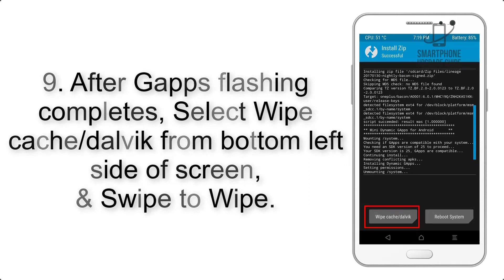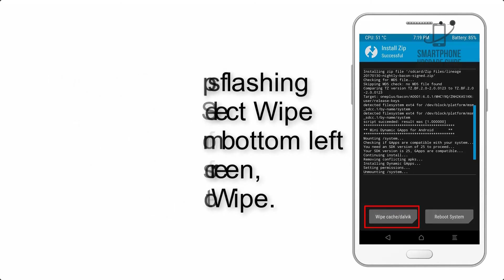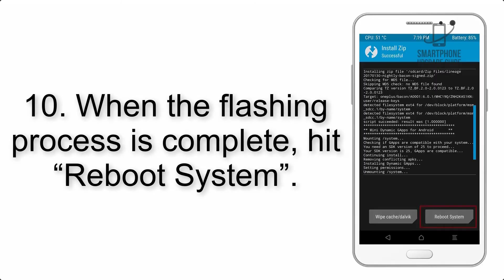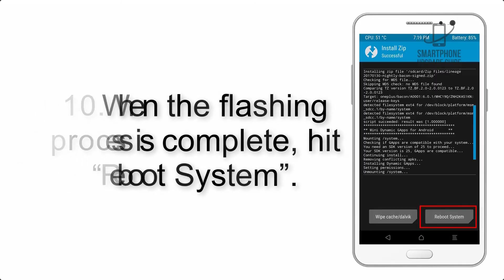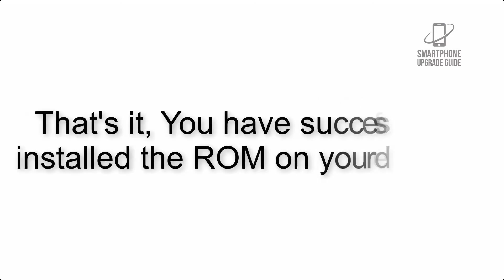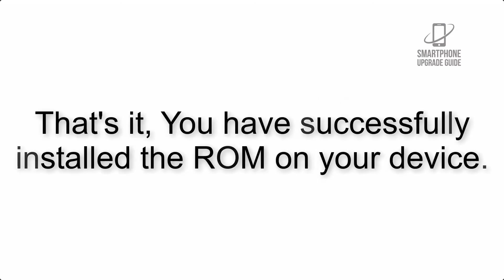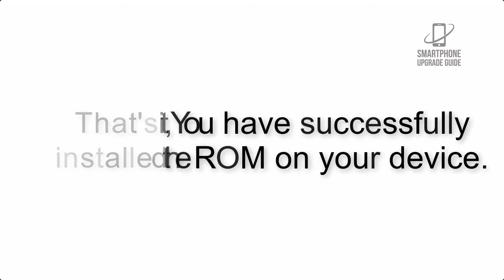Step 9: After GApps flashing completes, select Wipe Cache and Dalvik from the bottom left side of the screen and swipe to wipe. Step 10: When the flashing process is complete, hit Reboot System. That's it — you have successfully installed the ROM on your device.